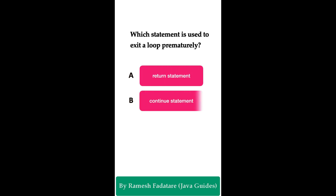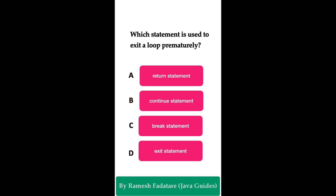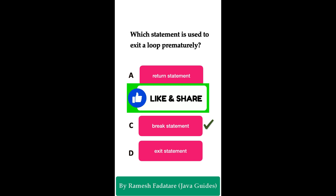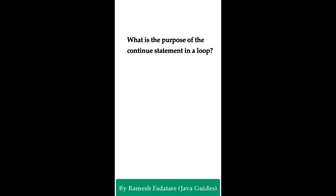Option A: return statement, Option B: continue statement, Option C: break statement, Option D: exit statement. You have five seconds to answer. The correct answer is Option C: break statement. The break statement is used to exit a loop — whether it is a for, while, or do-while loop. It is also used in switch-case statements. The break statement terminates the loop and transfers execution to the statement immediately following the loop.